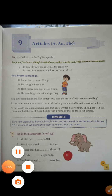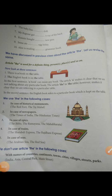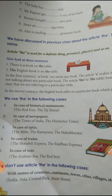Now the next article is THE. We use THE for a definite thing. Article THE is used for a definite thing, person, place, and so on. We also use THE in such cases: if we have talked about a noun and the second time we are again talking about the same noun, then we use THE. For example: There is a book on the table. The English book is on the table.